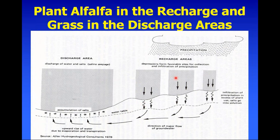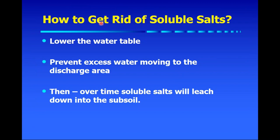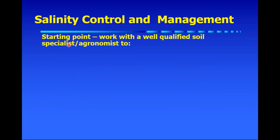You want salt-tolerant grasses in the salt-affected area and alfalfa in the recharge areas — these are just cultural controls, and they can be fairly effective as long as you can clearly identify the recharge areas. To get rid of salts, we must lower the water table. In the recharge area we want to prevent excess water from moving down to the groundwater; then over time, those soluble salts in the discharge area will gradually move down. If you have soil salinity and want to try management, a good starting point is to work with a well-qualified agronomist.